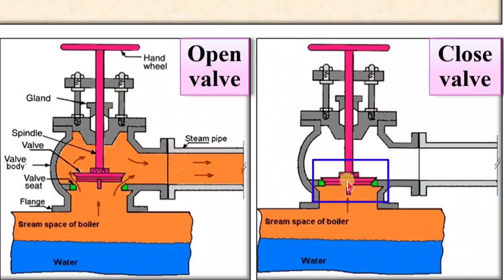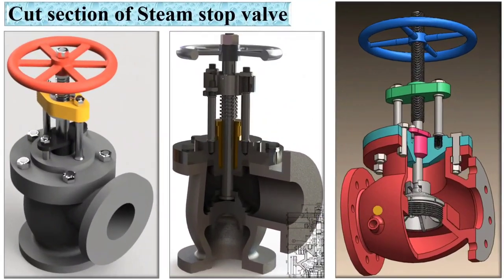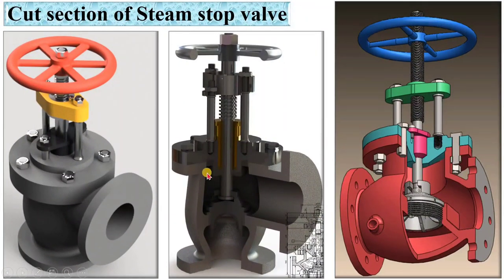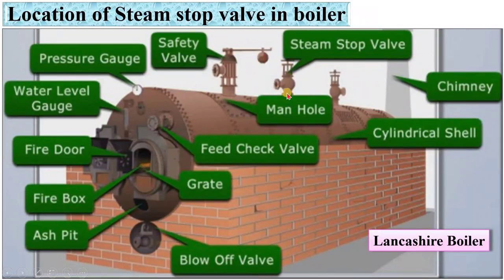By default it is in off condition like this. This is the cut section and the 3D model of the steam stop valve so that you can exactly understand the construction and working of the steam stop valve. This is the figure of the Lancashire boiler. Here you can see the location of the steam stop valve, which is generally attached to the top of the boiler shell.